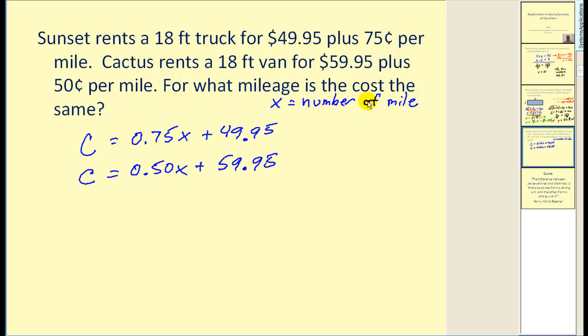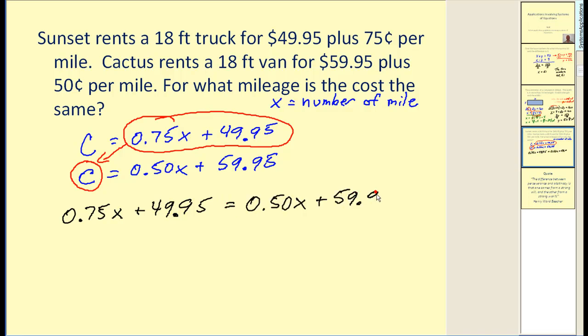The question asks, for what mileage is the cost the same? So we're trying to find the values of x and C that satisfy both equations at the same time. Again, we can solve this using a variety of methods, but what sticks out for me is substitution because both equations are already solved for C. So since C is equal to this in the first equation, we'll replace the C in the second equation with this expression and then solve by performing substitution. So the result would be this equation.